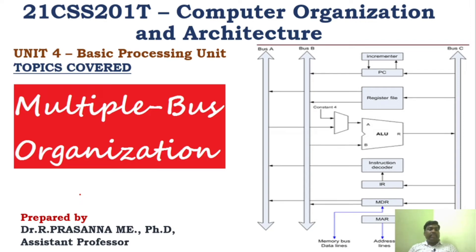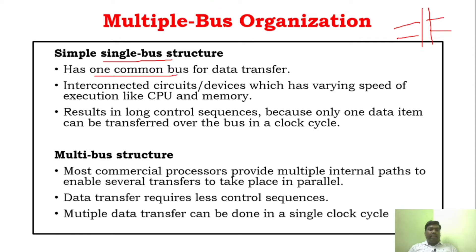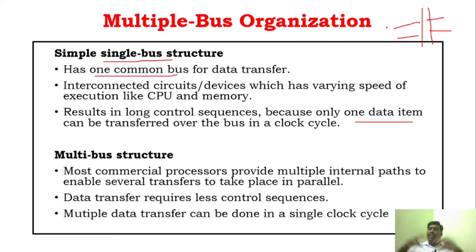Before starting multiple bus organization, we will see the basic difference between single bus structure and multi-bus structure. From the name itself, single bus structure has only one common bus. All registers, ALU, multiplexer — everything is connected to that one bus. It can transfer only one data per clock cycle, and it is connected with different devices such as I/O devices of varying speed.